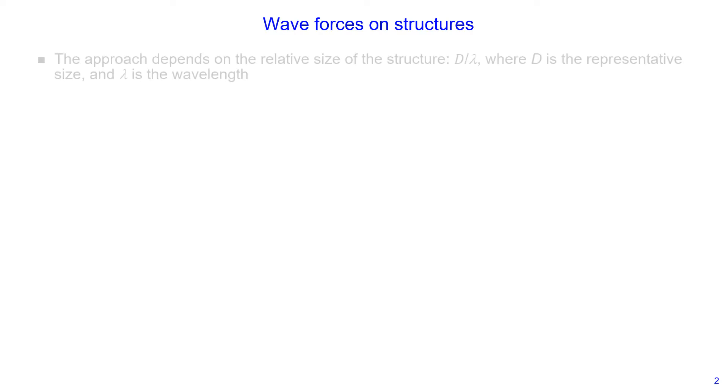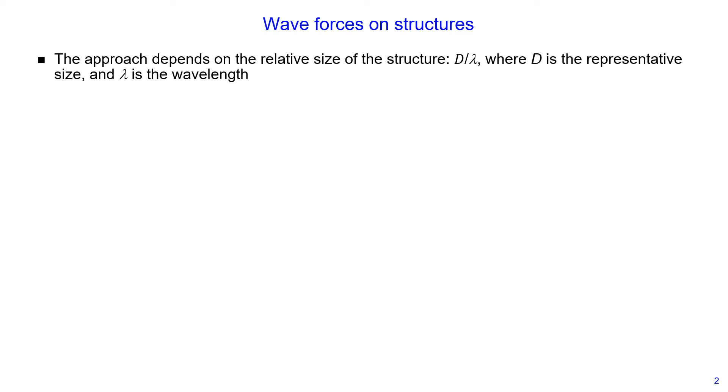How can we estimate wave-induced forces on structures? The approach you take depends on the relative size of the structure, defined by the ratio of representative size of the structure to the wavelength — D divided by lambda, where D is the representative size of the structure, for example diameter, and lambda is the wavelength. Depending on this ratio, there are three different types of structures.